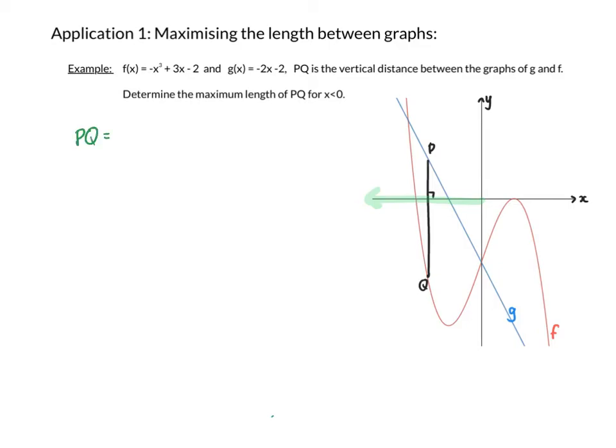Let's write down an expression for PQ. Now on the left of the y-axis, g is on top, so I'm going to say g of x minus f of x. Now I can substitute in the values from the equations. Obviously, to work with PQ easily, it would make sense to simplify this expression. So I end up with the length of PQ being x cubed minus 5x.